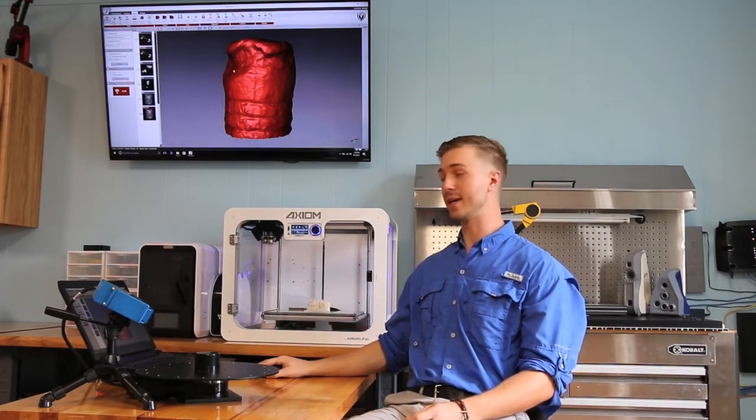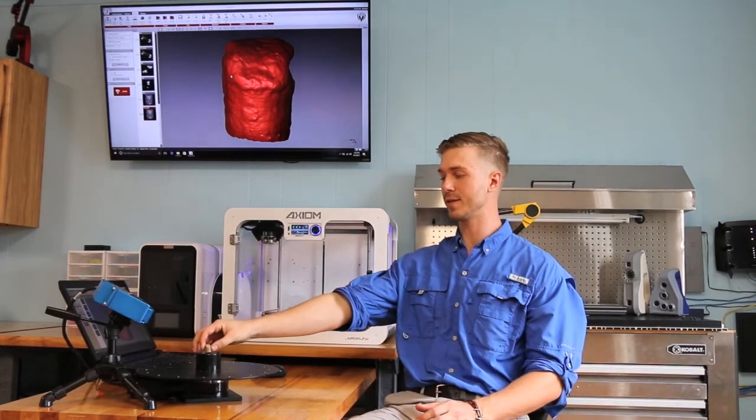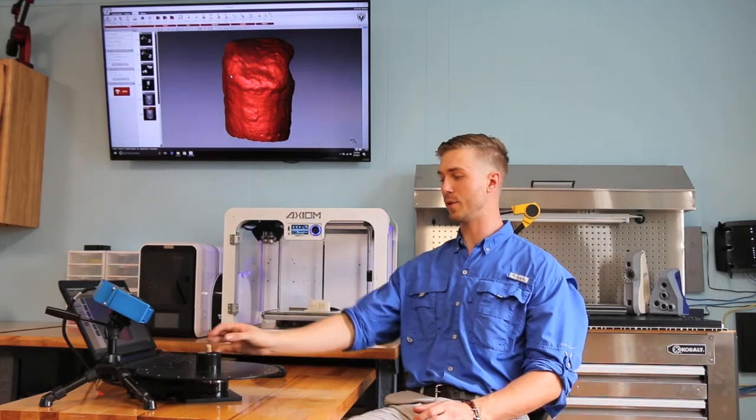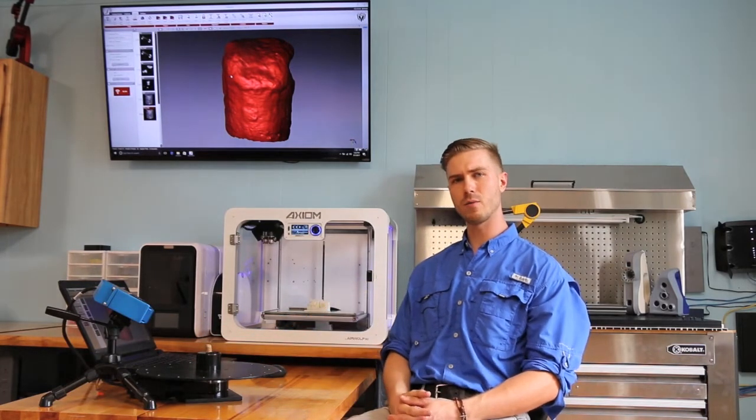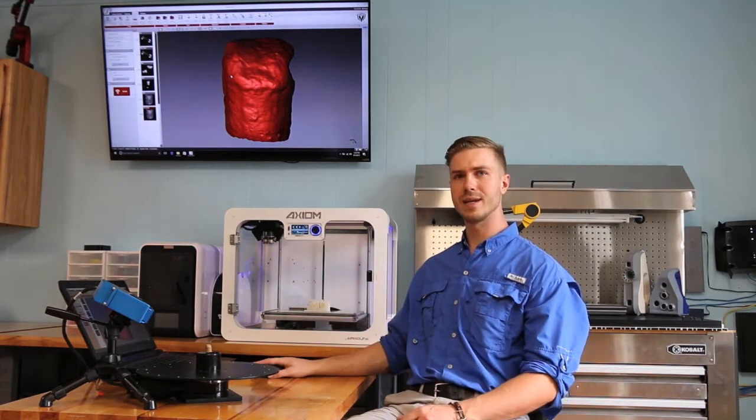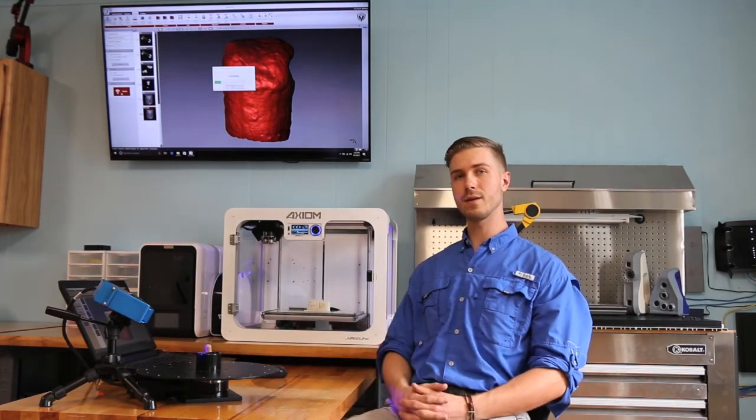We can see that end result after it's been scanned here on the screen. So let's walk you through the process of how we would scan this part, and talk a little bit about the HDI 109, how it works, and what we can use data like this for. To get started, we simply press scan here on the screen.